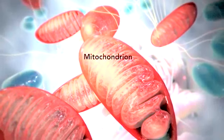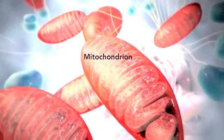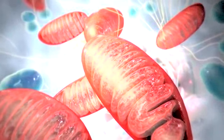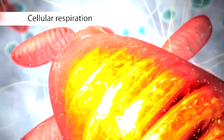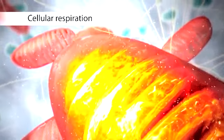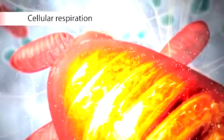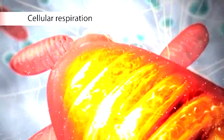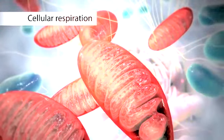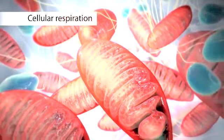The mitochondrion is an organelle that is the powerhouse for both animal and plant cells. During a process called cellular respiration, the mitochondria make ATP molecules that provide the energy for all of the cell's activities. Cells that need more energy have more mitochondria.